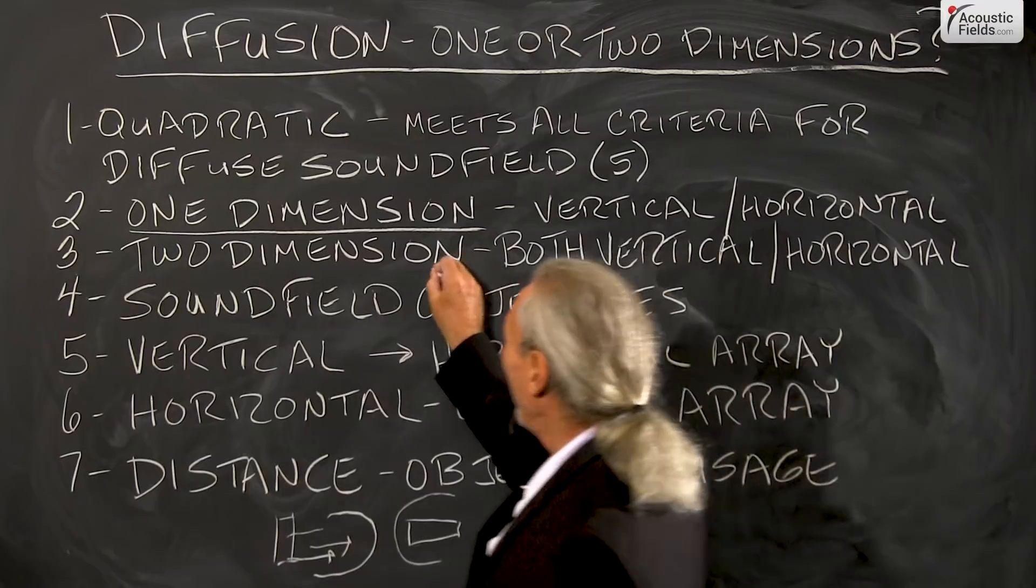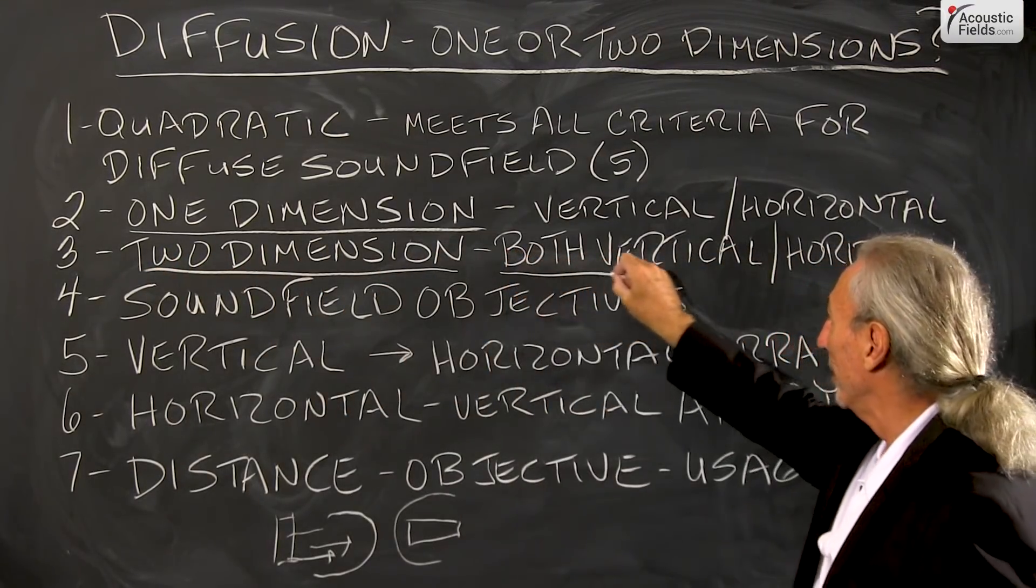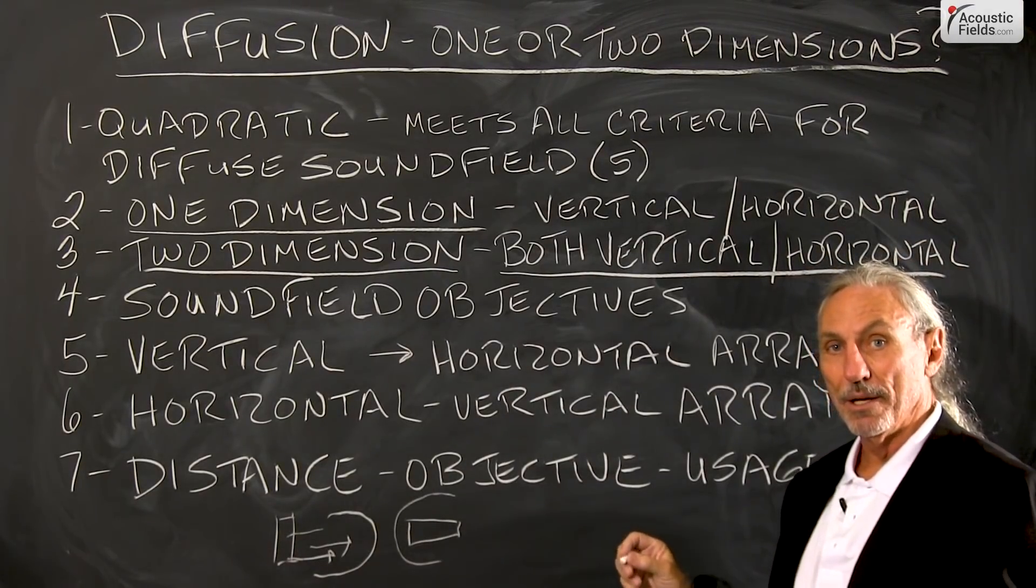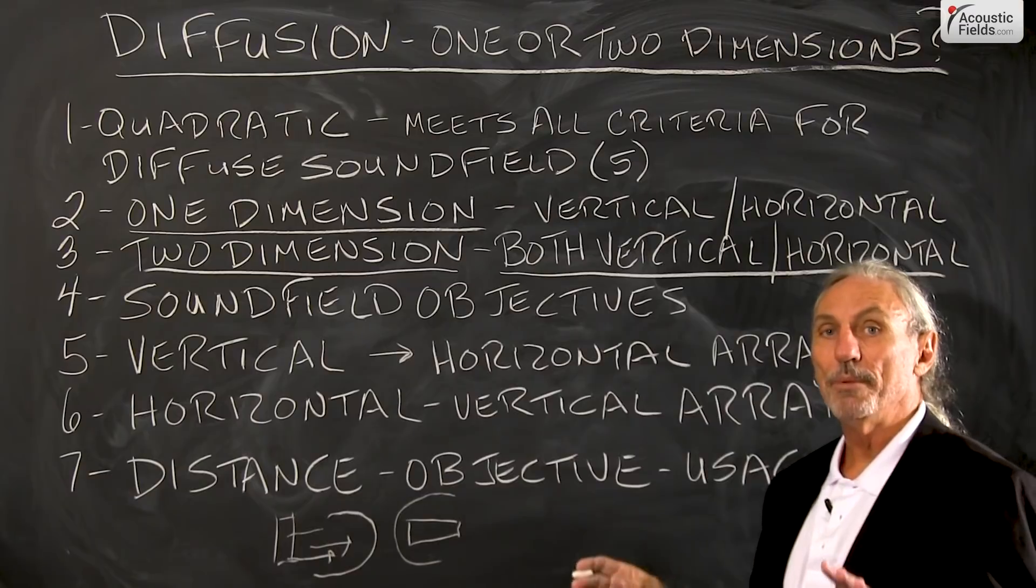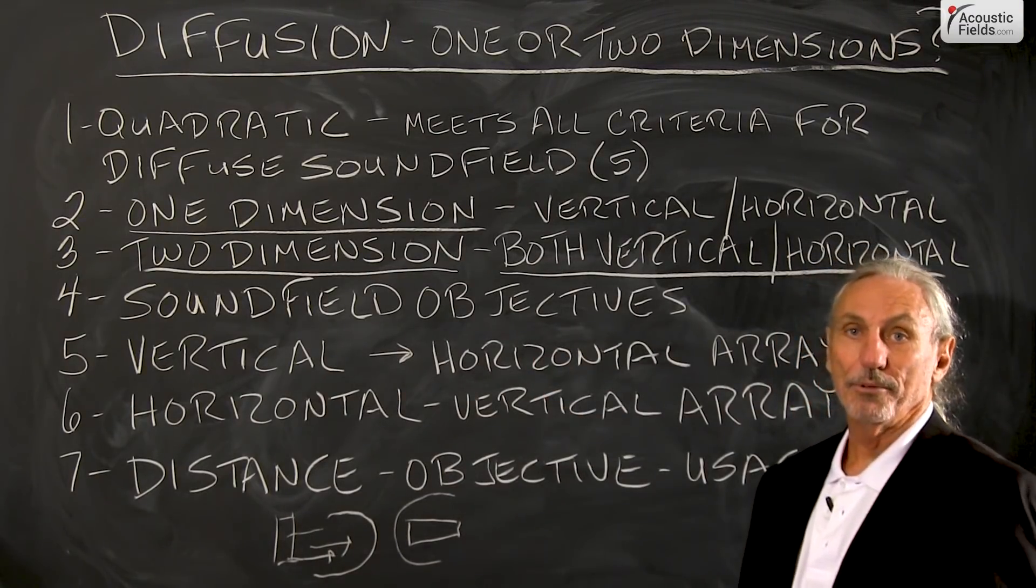So when we're after two dimensions of diffusion, we take both vertical and horizontal positioning and that gives us two dimensions of diffusion. So it gives us a vertical and a horizontal array.